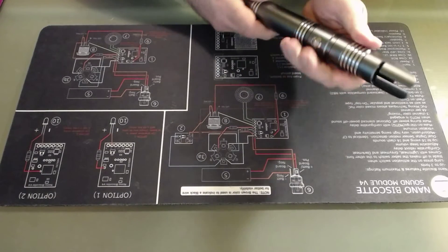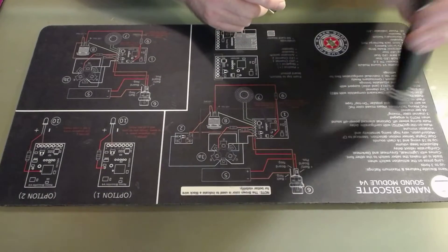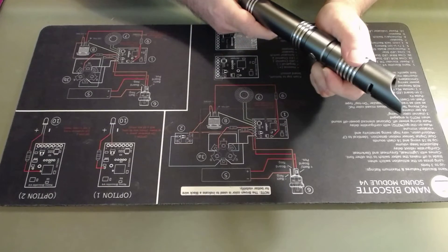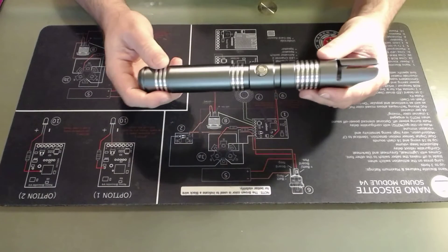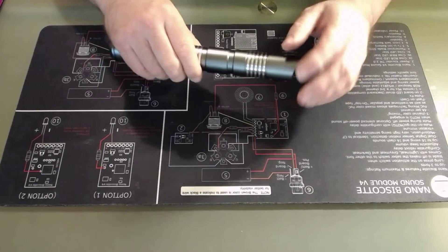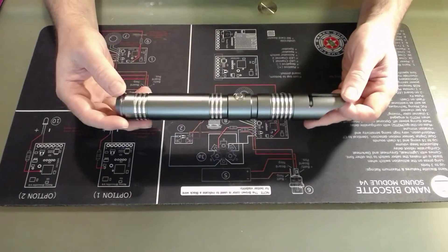Grip points especially for those of you who like a high grip point around about here. A lot of people grip their sabres just under the emitter. Got some nice milling like so and also down on the main handle.